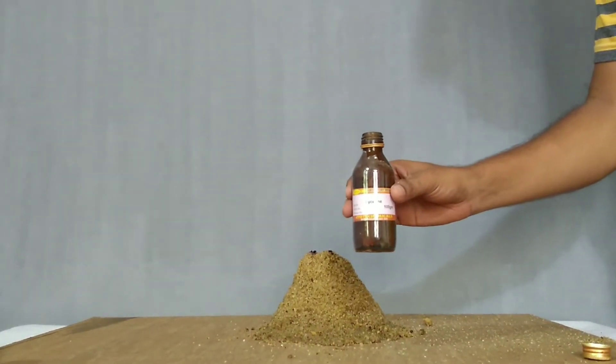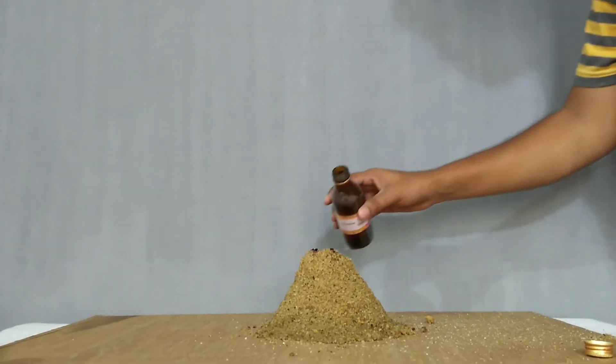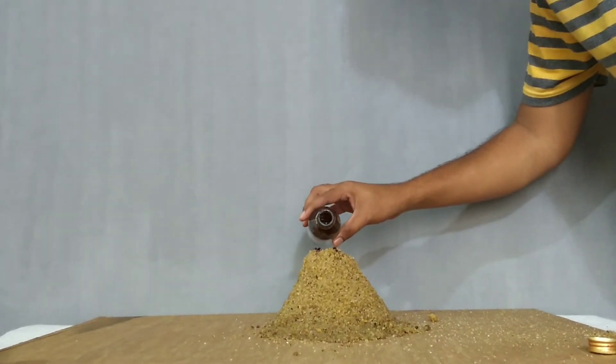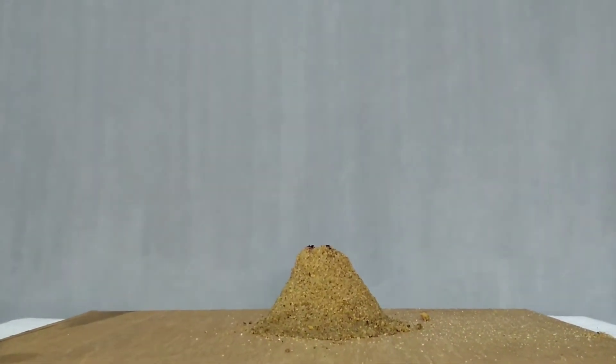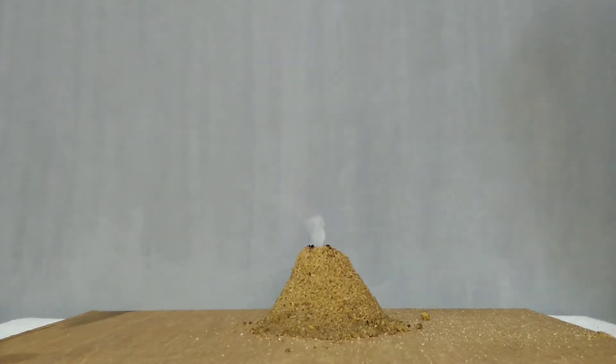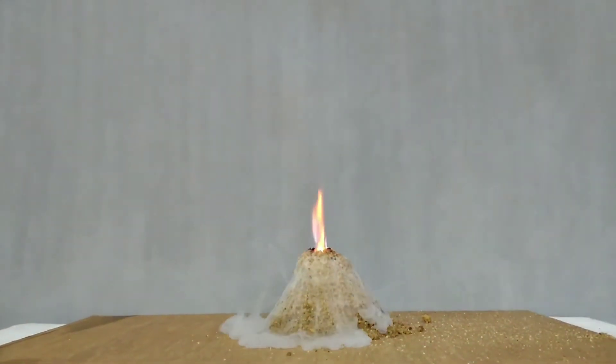Pour little glycerol over the pile of this potassium permanganate. Slowly pour the glycerol over the pile.